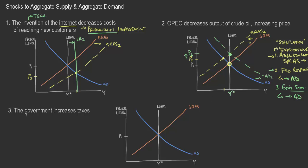Let's move to the third example: the government increases taxes. This is essentially the reverse of what we were just discussing. If the government increases taxes, that takes money out of individuals' pockets — it reduces consumption and reduces the amount of money available for individuals. We would see a shift to the left of the aggregate demand curve, marked as AD 2. In the short run, we would see a decrease in output but also a decrease in prices.